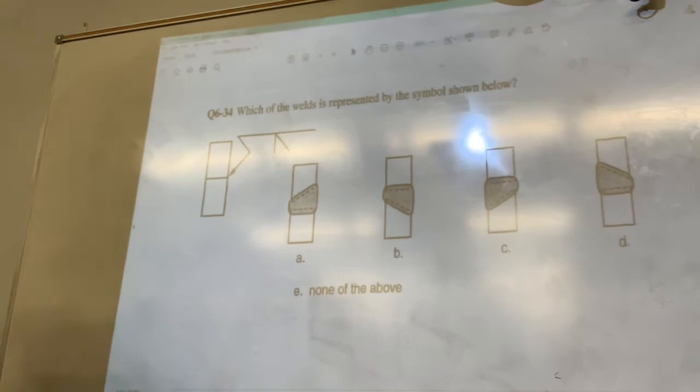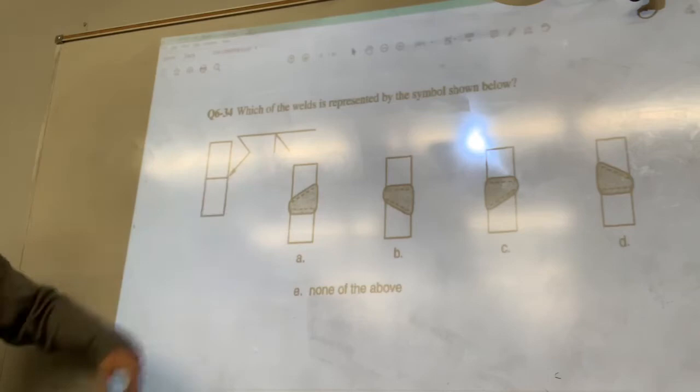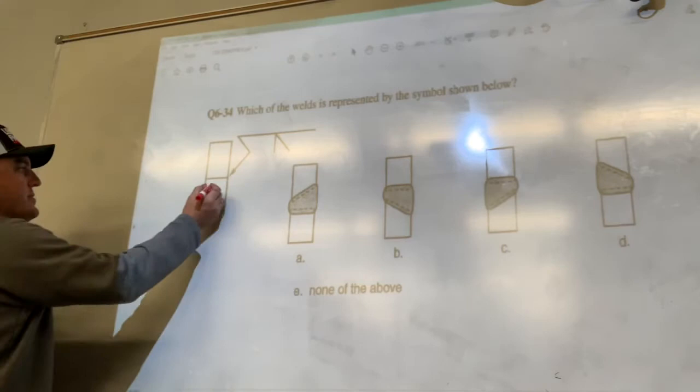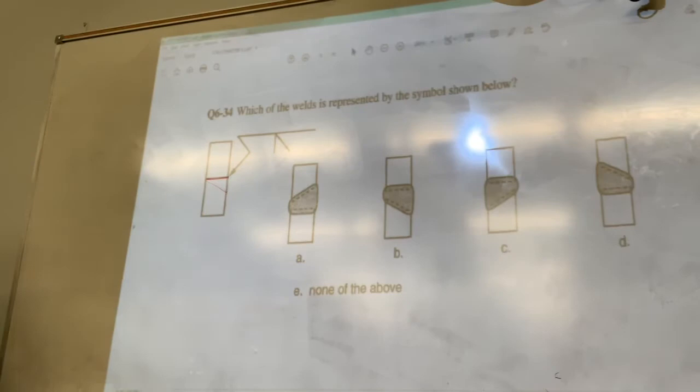Alright, so we have arrow side. So it's going to be worked from the right side where the arrow is. Our work piece is pointing down here, so that's what we're going to have. What is that? B.